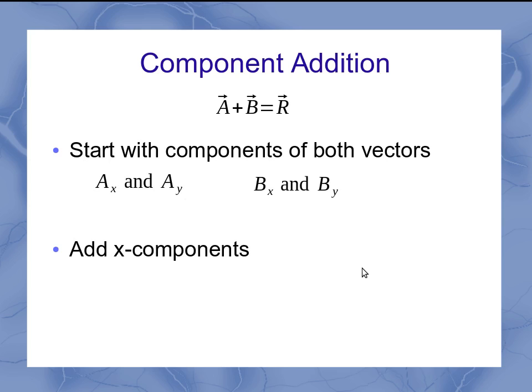Then I add the x components. So I take the Ax and the Bx, those combined together to give me my Rx, and I do the same sort of thing for the y, taking my two y components and adding them up. So even if I don't have these vectors graphed out on grid paper, if I know their components, I can add up the components.